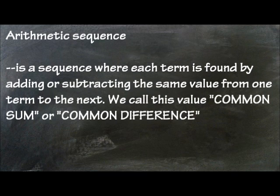An arithmetic sequence is a sequence where each term is found by adding or subtracting the same value from one term to the next. We call this value common sum or common difference.